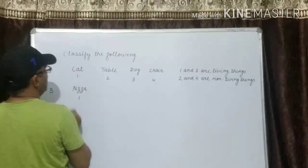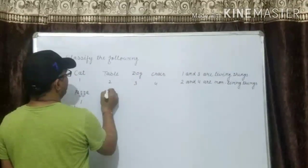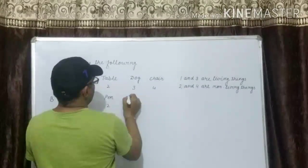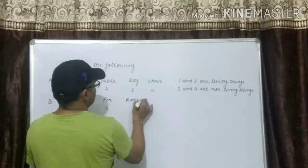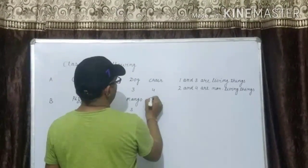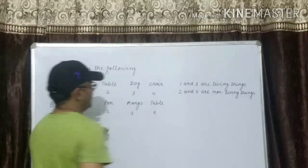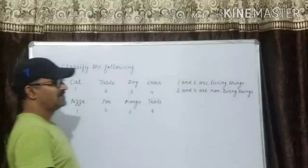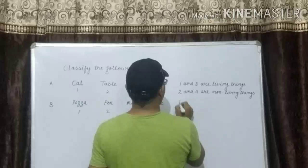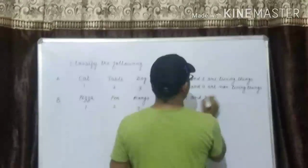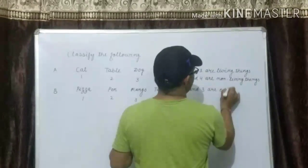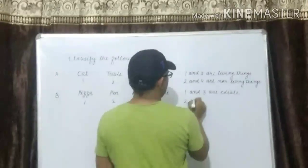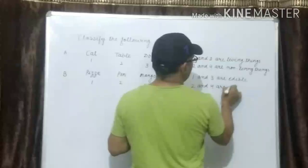Next puzzle: number one is pizza, number two is pan, number three is mango, number four is table. How can you classify them? Pizza and mango — one and three — are edible things. Pan and table — two and four — are non-edible things.